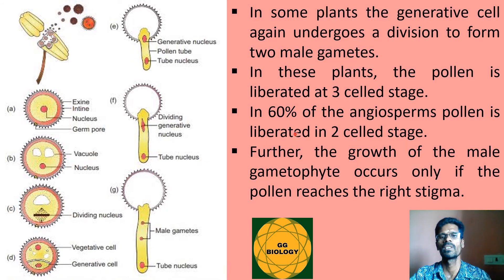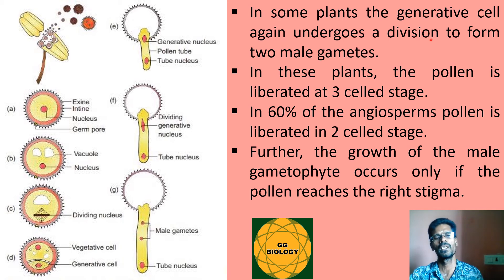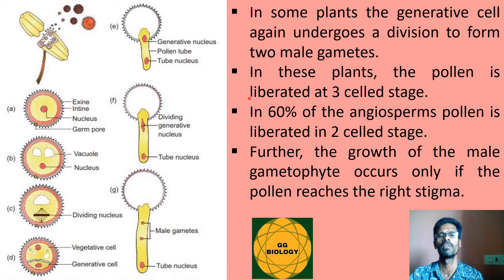In 60 percent of angiosperms, pollen grains are liberated at this two-cell stage comprising the vegetative cell and the generative cell. In some plants, the generative cell later divides into two male cells called sperms, and in these plants the pollen grains may be liberated at the three-cell stage. Further growth of the male gametophyte occurs only after the pollen reaches the stigma.